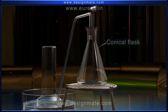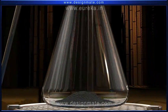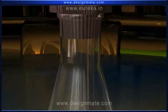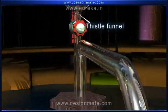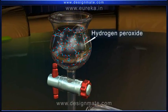The experimental setup has a conical flask containing manganese dioxide, which acts as a catalyst. The thistle funnel is fitted to this flask and filled with hydrogen peroxide.